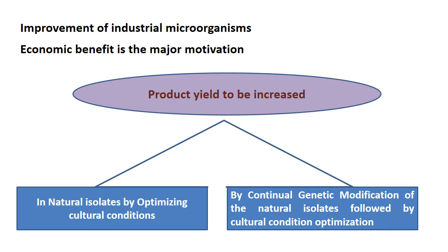To increase productivity further, we need to modify the genome. The strain improvement technique involves continual genetic modification of the natural isolate, followed by further cultural condition and culture media modifications to improve productivity further and further. Through strain improvement techniques we try to improve the productivity of the industrial microbe, whether it is in terms of biomass, primary metabolite, or secondary metabolite.